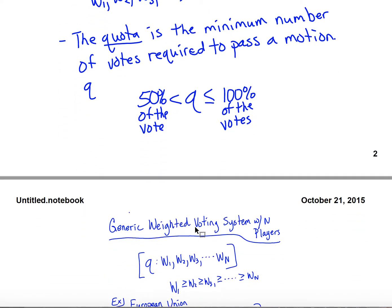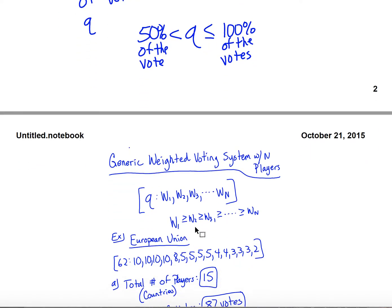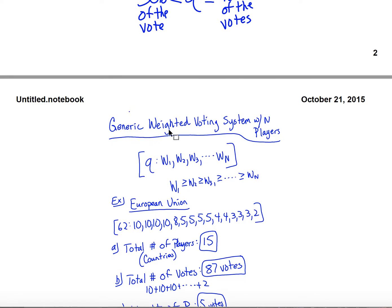A weighted voting system with n players is written starting with a bracket, then the quota — telling people how many votes are needed to pass something — followed by a colon to separate the quota from the weights, and then the weights for each player separated by commas. It's usually nice to list them in order from highest weight to lowest, though it isn't required.